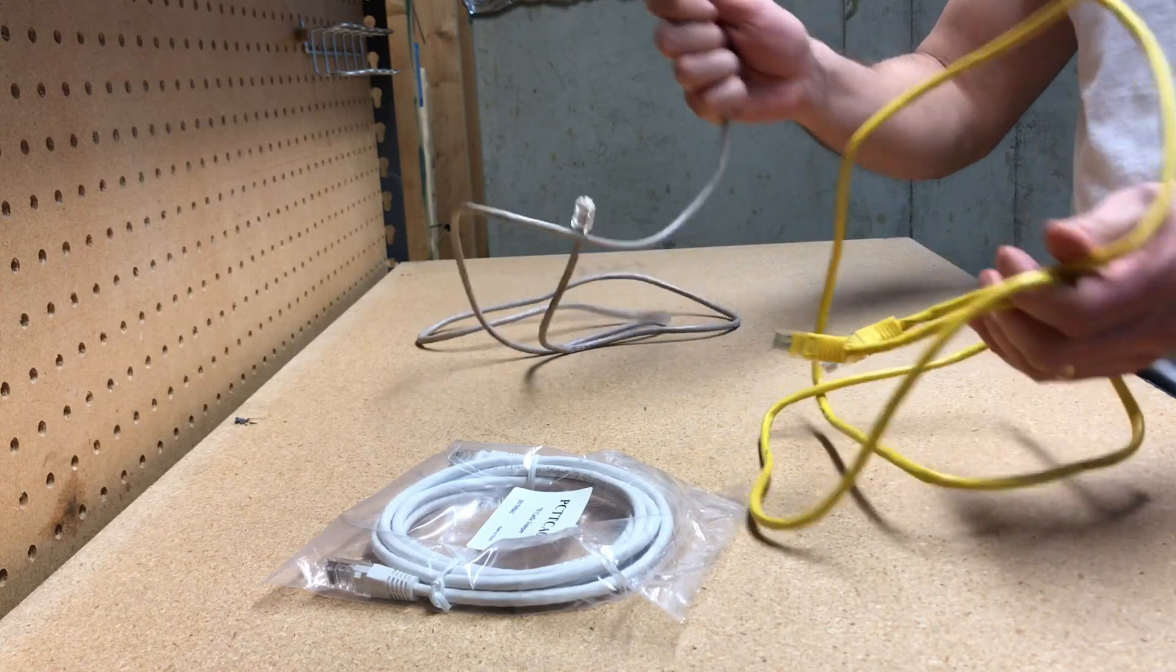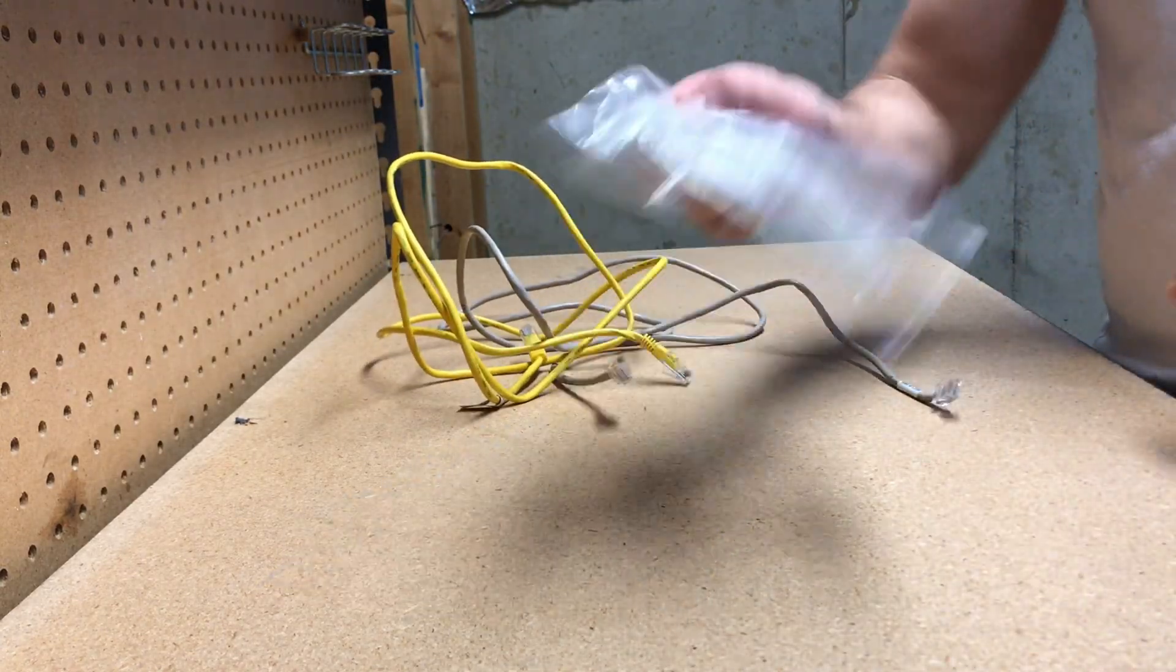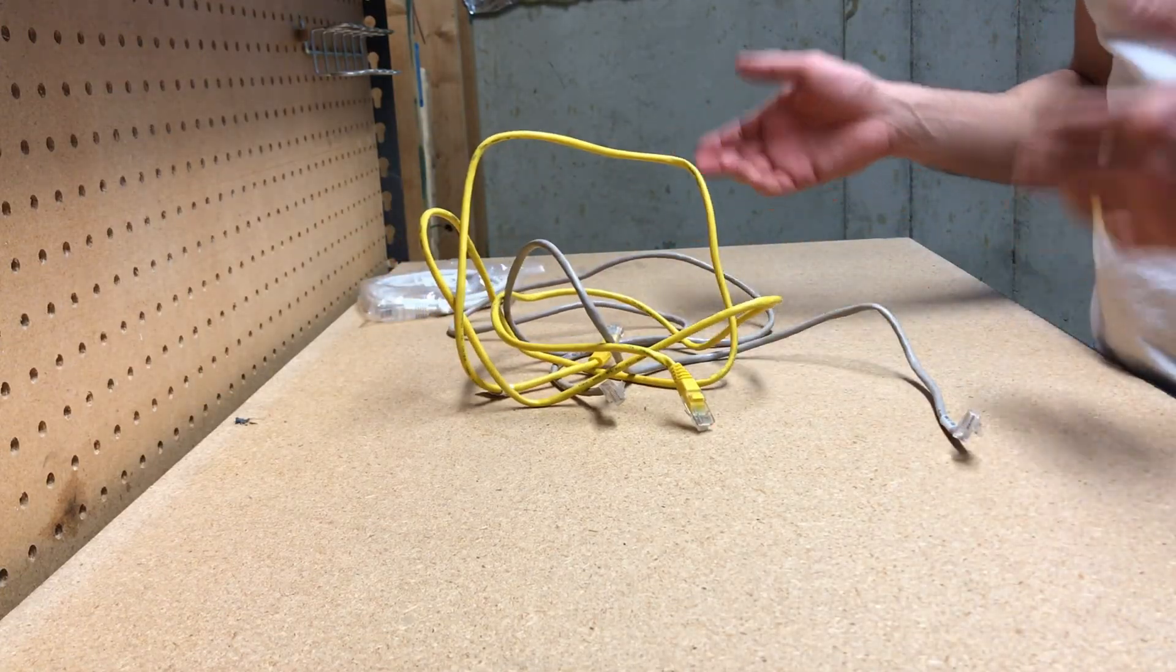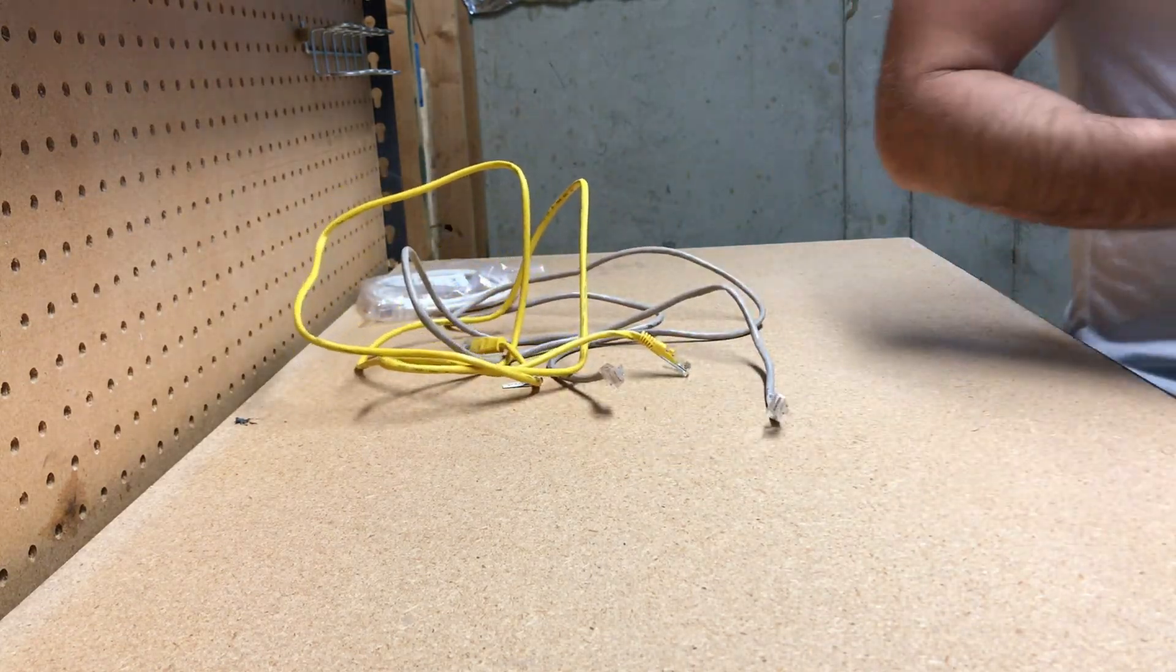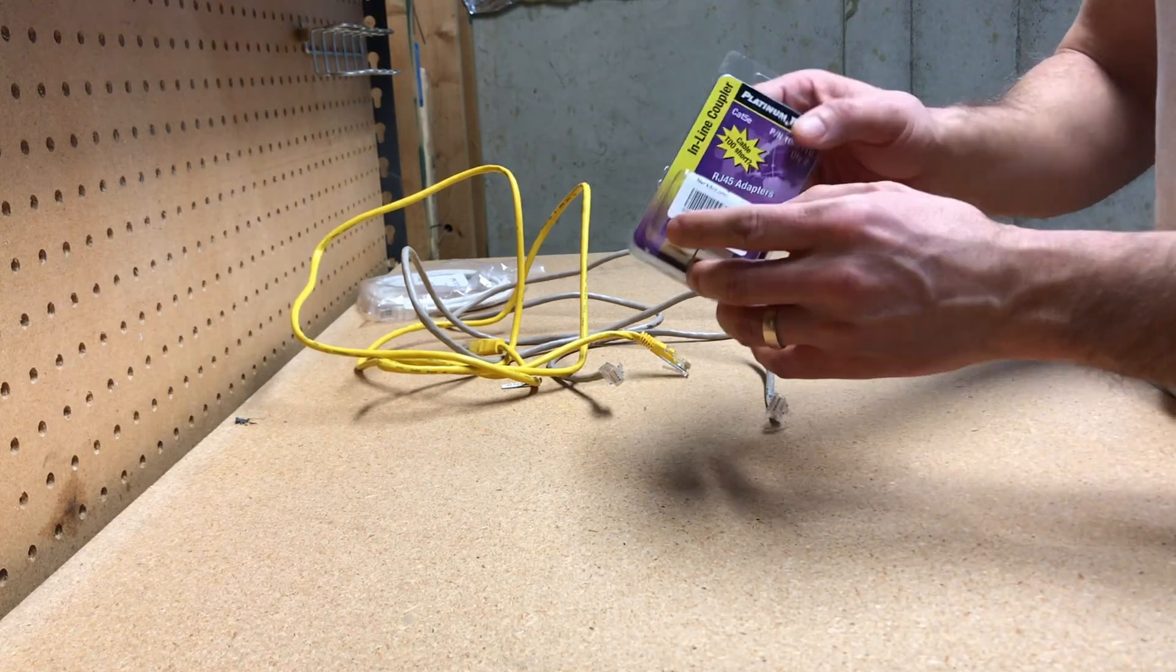Most people probably just throw them away or put them in a box somewhere in the garage. Instead of going out and buying a 25-foot cable or 100-foot cable, there's actually a cheaper solution - this thing right here called an inline coupler, only about seven bucks.